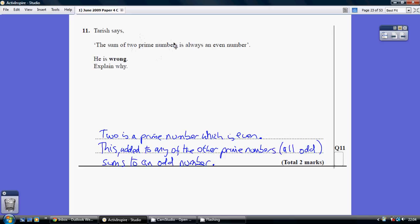So if you add a couple of odd numbers together, you do get an even number. But this question is all about the fact that the number two is a prime number.